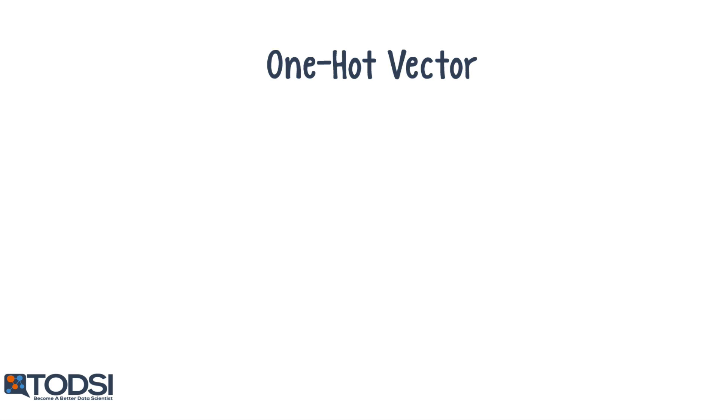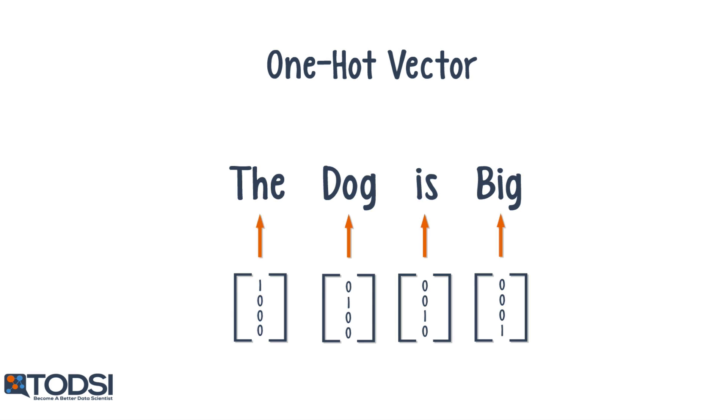In this form, each word is represented as a vector whose length is the size of the entire vocabulary. Every value in the vector is set to zero, except for the index that maps to the word, which is set to one.